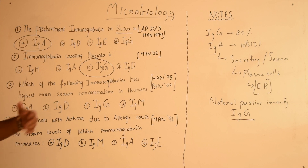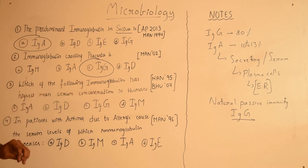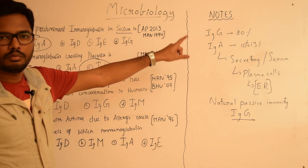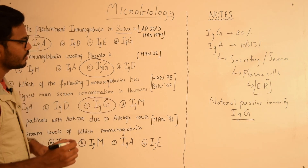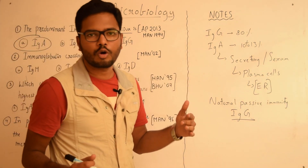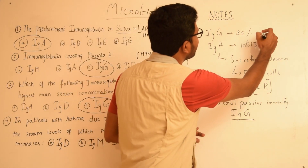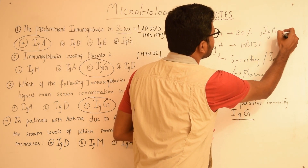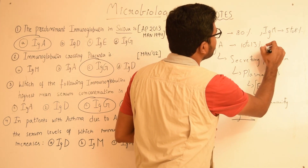The next question: which immunoglobulin has the highest mean serum concentration in humans? As discussed previously, IgG accounts for 80% of all immunoglobulins present in serum. Looking at other immunoglobulins: IgA is 10 to 13%, and IgM is around 5 to 8%.